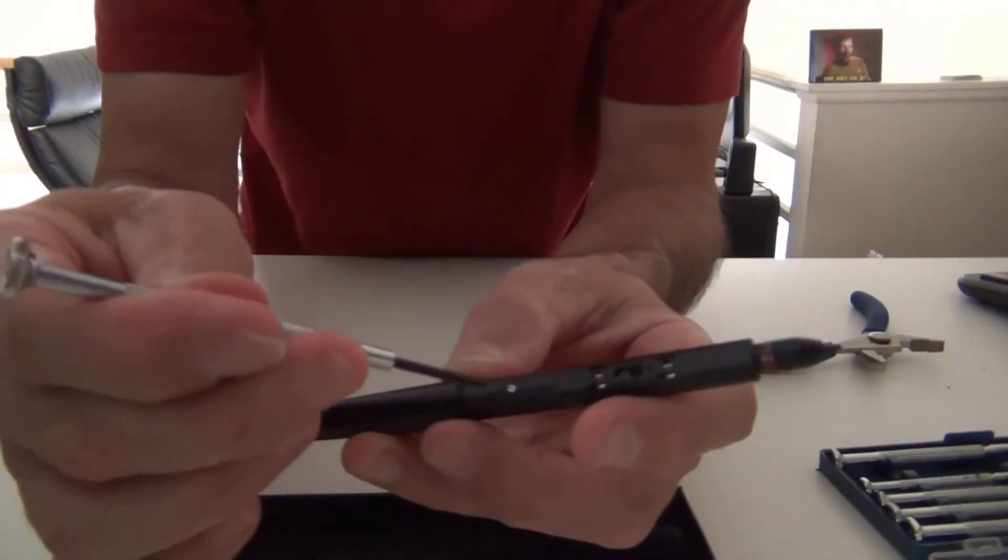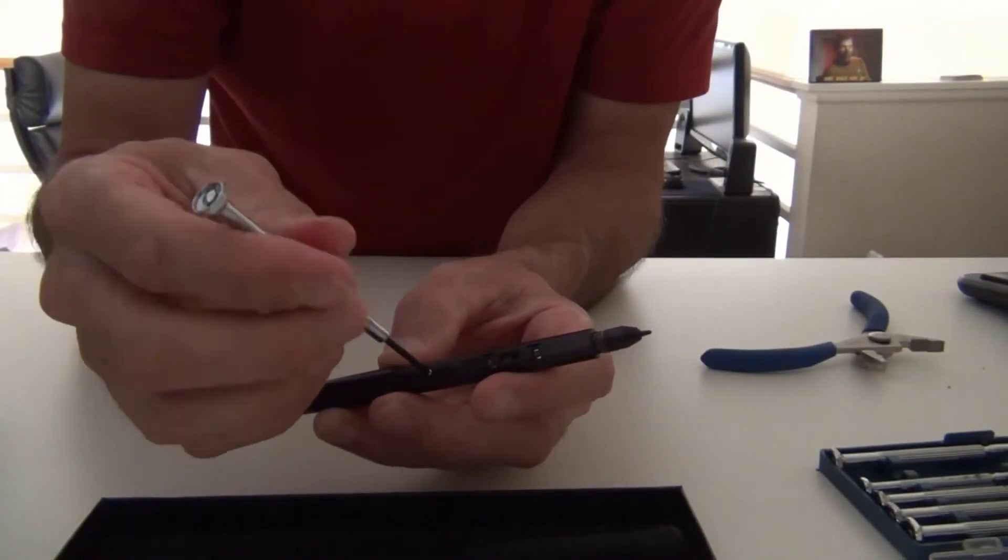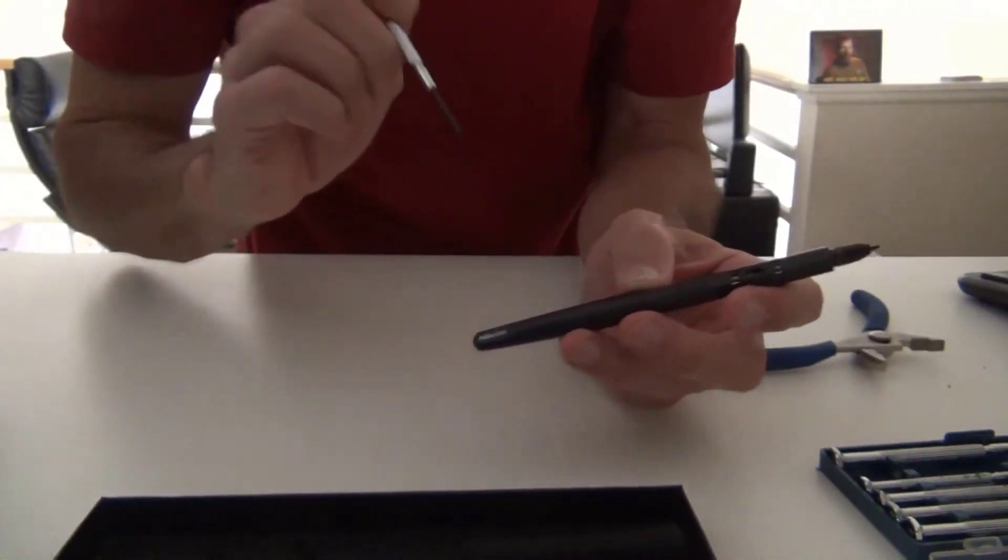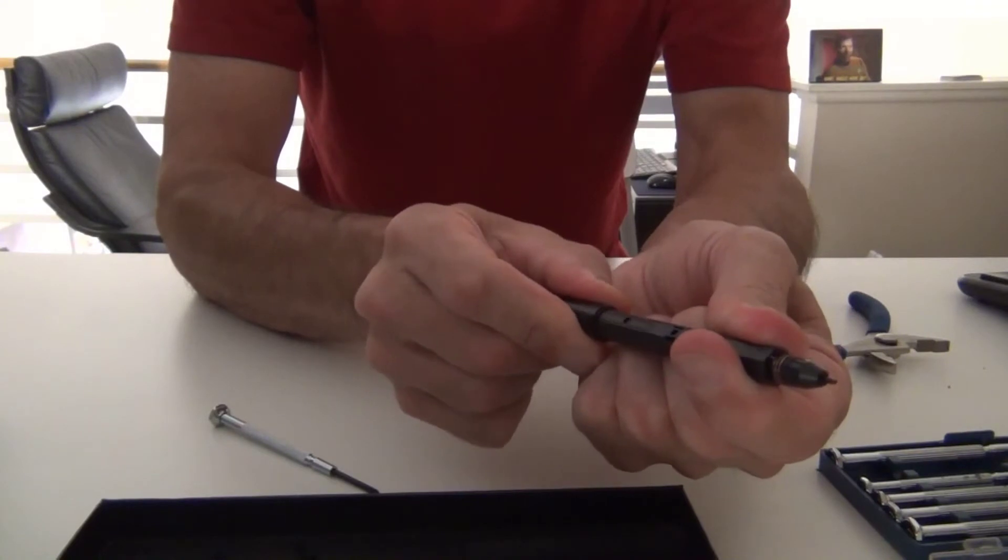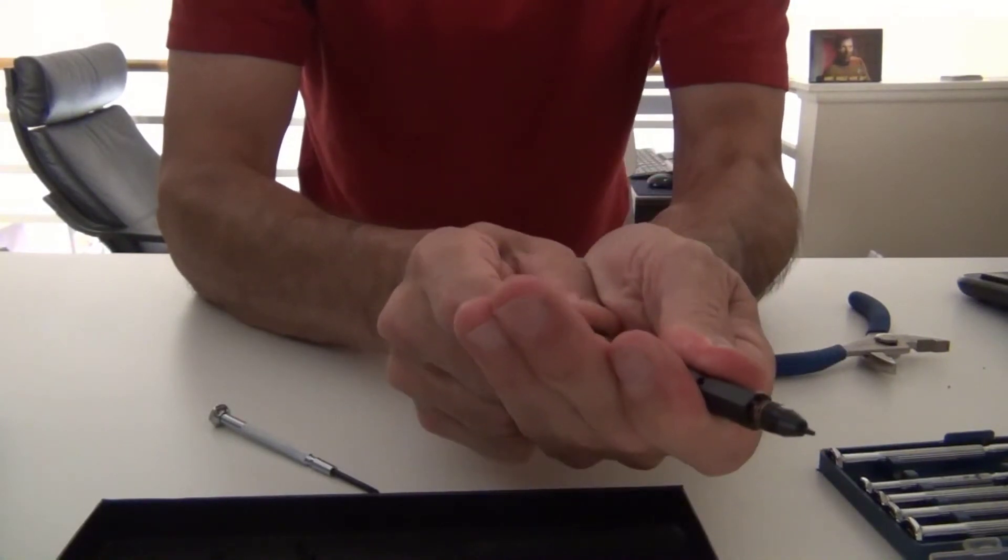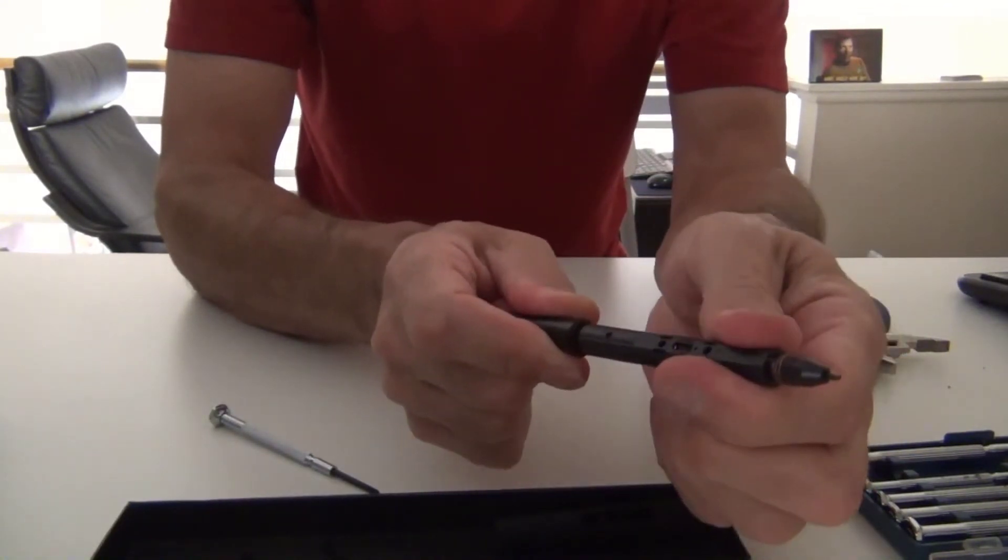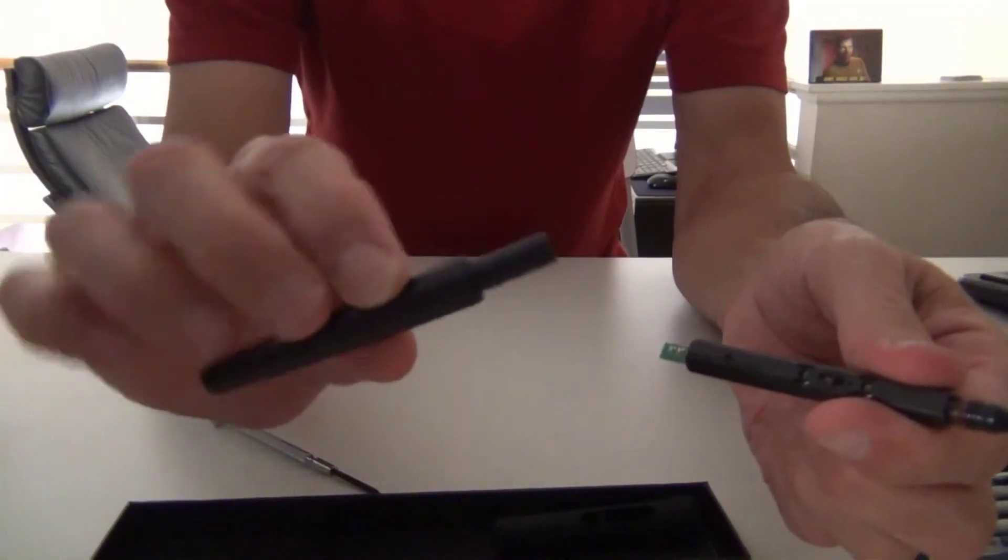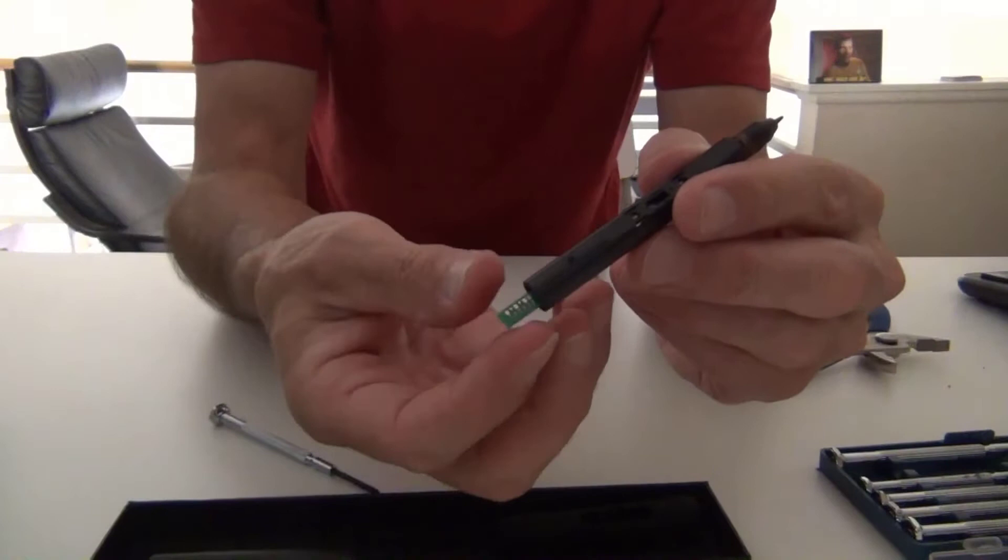So then I remove the red ring, and then there's a tiny screw that holds this stylus together, so I remove that with an itty-bitty Phillips screwdriver, and I separate the pieces revealing the little circuit board thingy.